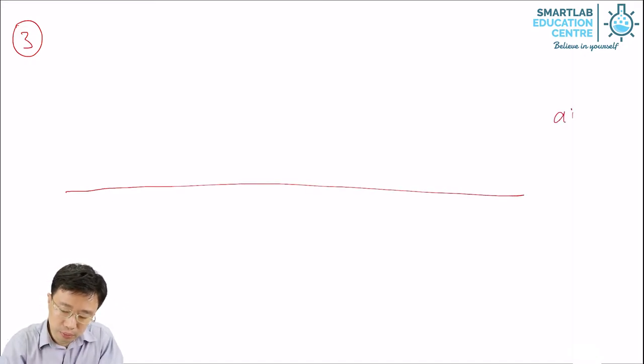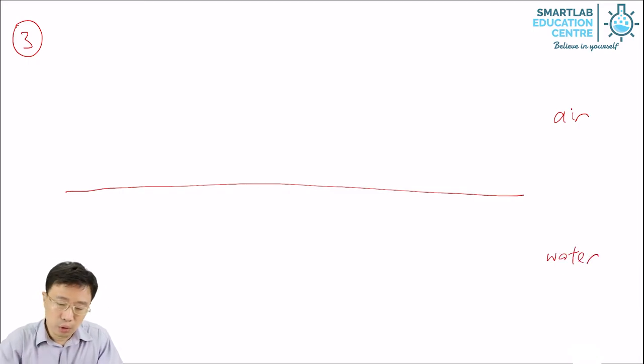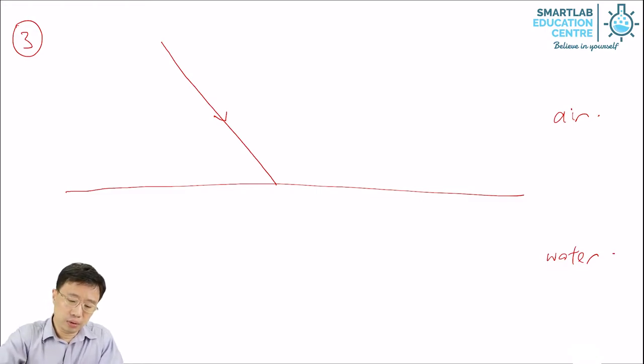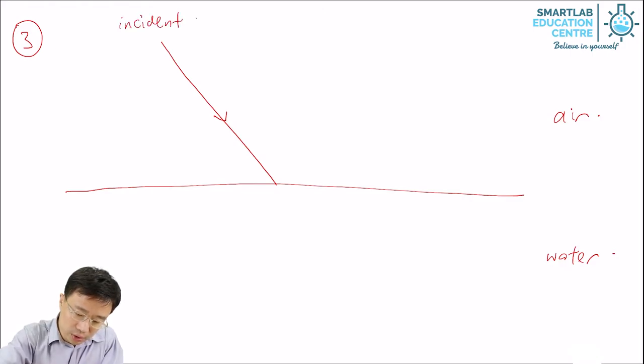So suppose we have air on top, we have water below. We have a ray of light traveling from air towards the separation of air and water. Now, like in the case of reflection, this ray of light is called the incident ray.